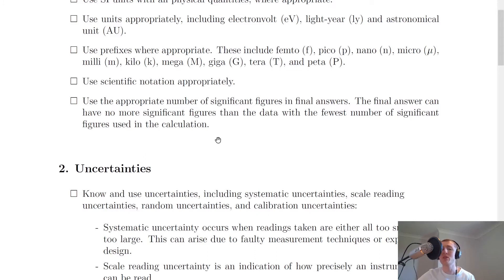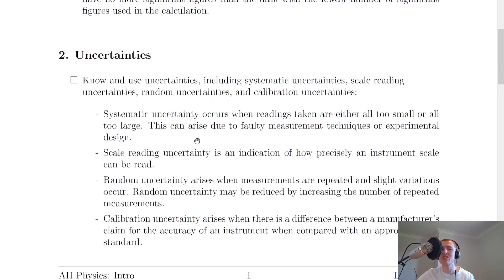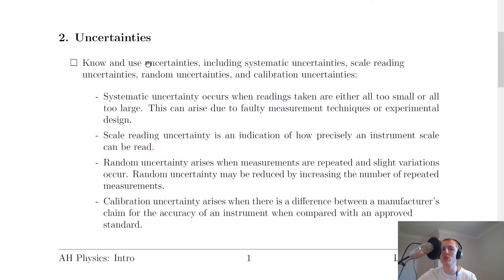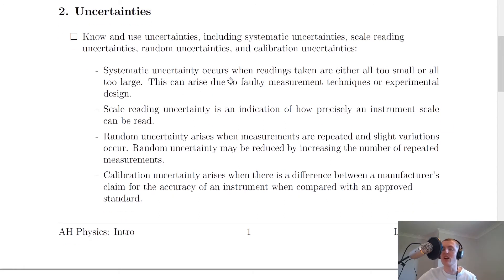Remember, in the theory video for significant figures, we went over the four main rules to decide whether a number is a significant figure. Moving on, we have uncertainties. You need to know and use uncertainties, including systematic uncertainties, scale reading uncertainties, random uncertainties, and calibration uncertainties. Calibration uncertainties were the only new one here — all others were seen at Higher level. Systematic uncertainty occurs when readings taken are either all too small or all too large, and can arise due to faulty measuring techniques or experimental design.